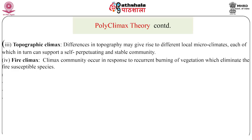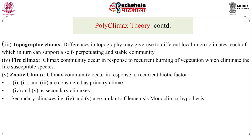Fire climax: when climax communities occur in response to recurrent burning of vegetation, which eliminates fire-susceptible species, such a climax community is known as fire climax. The last type is zootic climax: when a climax community occurs in response to recurrent biotic factors, for example grazing by cattle, such a climax community is known as zootic climax. The climatic climax, edaphic climax, and topographic climax are considered primary climaxes, whereas fire climax and zootic climax are secondary climaxes.